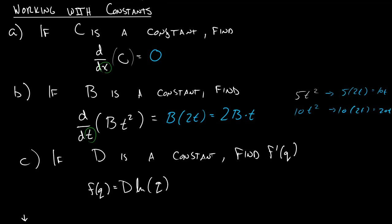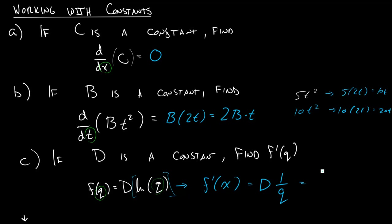Now the quantity allowed to vary is q, and we want to take the derivative of d times ln(q). We just pretend that d is some number — say d is 5. The derivative is d, because it's a constant, times the derivative of ln(q), which is 1/q. So we get d/q. If you're getting confused, whenever something is a constant, put in a number, but don't simplify — just swap the letter back in at the end.